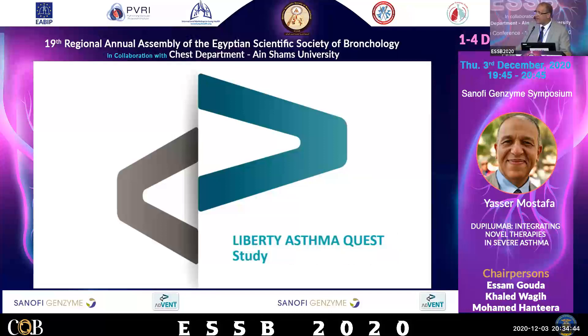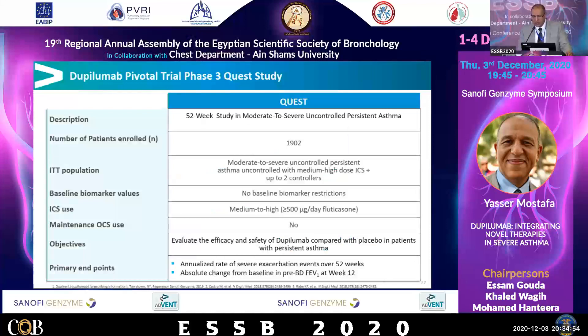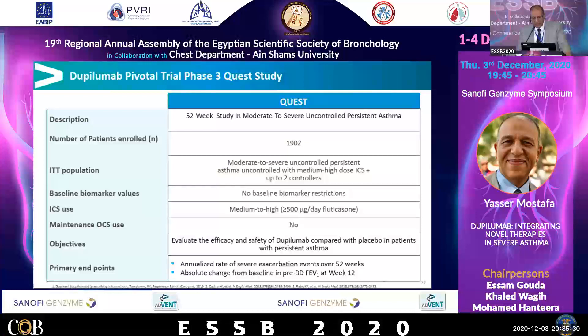The QUEST study is a 52-week study in moderate to severe uncontrolled persistent asthma with 1902 patients, uncontrolled with medium to high dose ICS plus two controllers. The objective was to evaluate the efficacy and safety of dupilumab compared with placebo. The primary endpoints were the annualized rate of severe exacerbation events over 52 weeks and absolute change from baseline in pre-bronchodilator FEV1 at week 12.